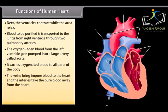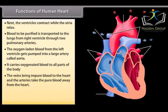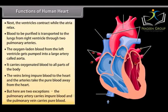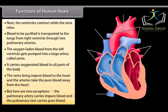The veins bring impure blood to the heart and the arteries take the pure blood away from the heart. But there are two exceptions: The pulmonary artery carries impure blood and the pulmonary vein carries pure blood.